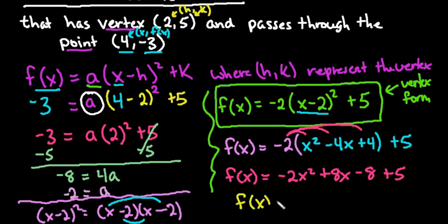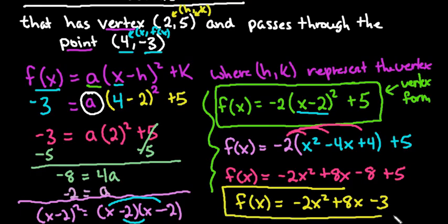If we simplify completely, we end up with f(x) = -2x² + 8x - 3. And this would be our final answer in simplified form.